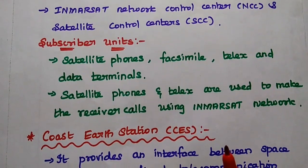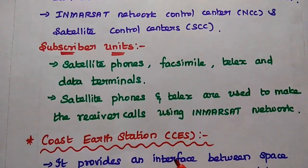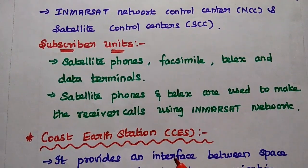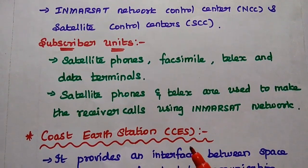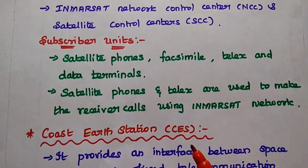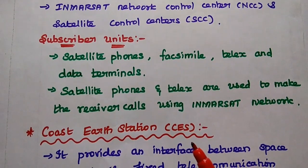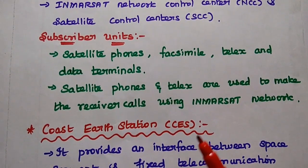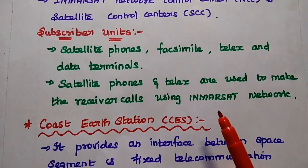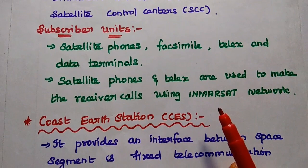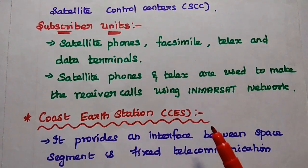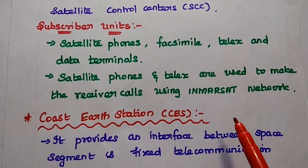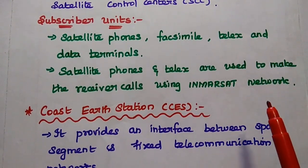End users can use satellite phones, facsimile, telex, and data terminals. Satellite phones and telex are used to make and receive calls using the Inmarsat network.